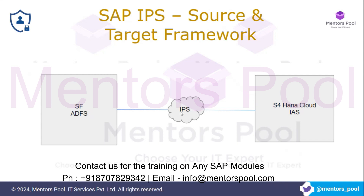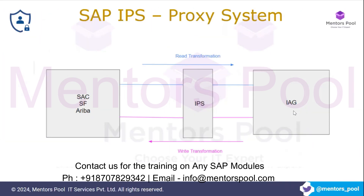When IEG, SAP IDM, or any other access governance tool takes the lead in triggering the provisioning request, we say IPS is acting as a Proxy System. In our previous case, IPS itself was triggering the provisioning request, reading, and writing. Here the external governance tool drives the trigger.